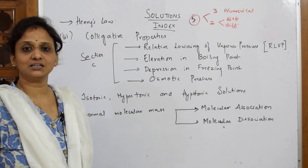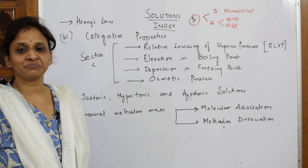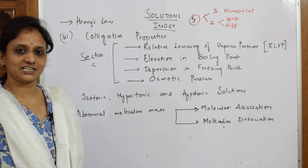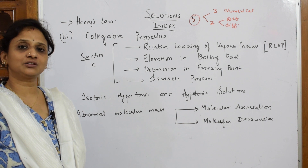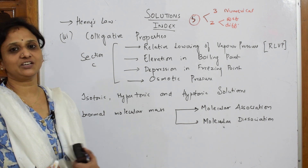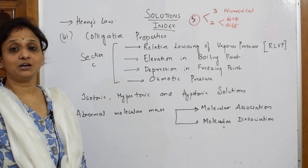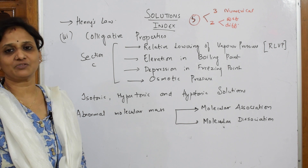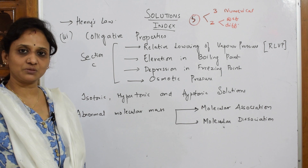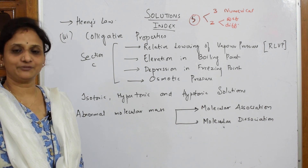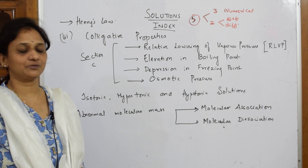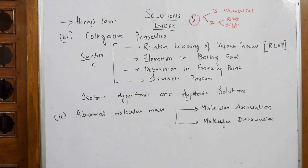After that we'll study abnormal molar masses — molecular association and molecular dissociation — and I'll also be teaching Van't Hoff factor, with numericals related to this. Part two of the book, organic chemistry, is completely done. Only polymers and chemistry in everyday life remain, and those are easier chapters. I'll gradually finish the syllabus by January 30th. So let us come back and meet with the first topic of the chapter.